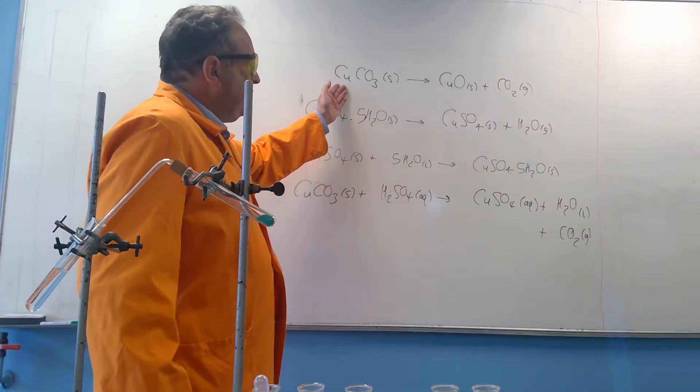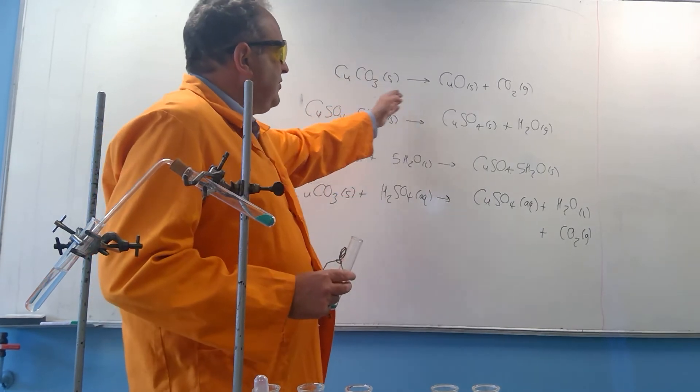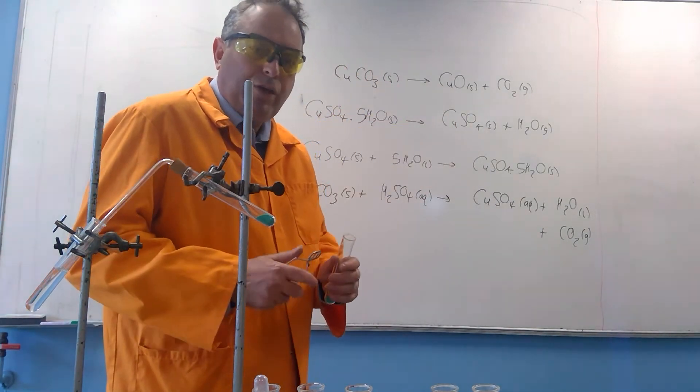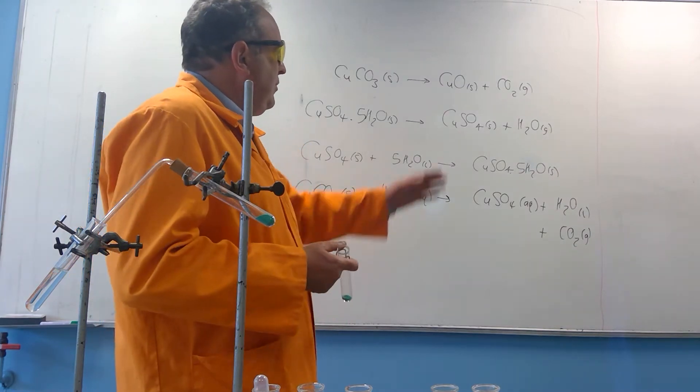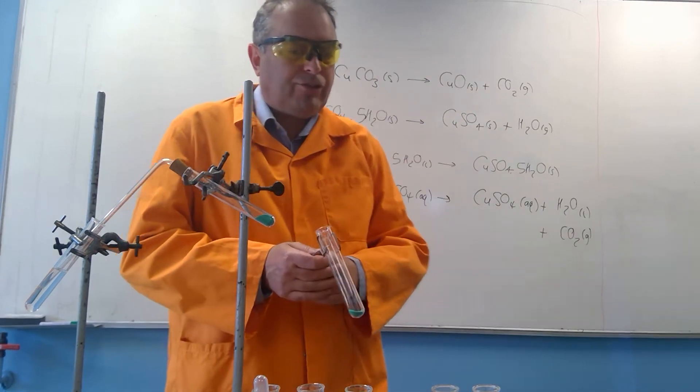You might not see that on the board. CuCO3 solid, a green solid. When heated it falls apart. Because we're heating it, we call that thermal decomposition, and you end up with copper 2 oxide (CuO) as a solid and carbon dioxide gas.